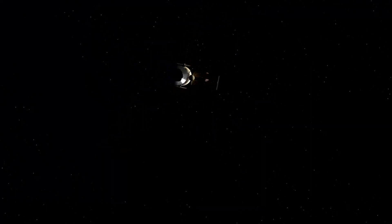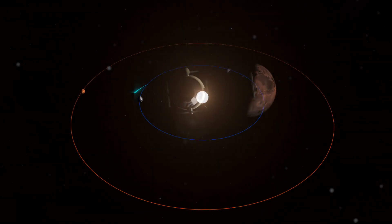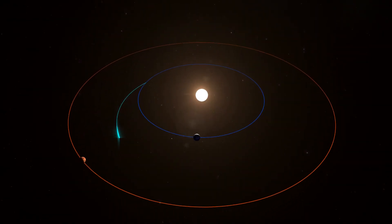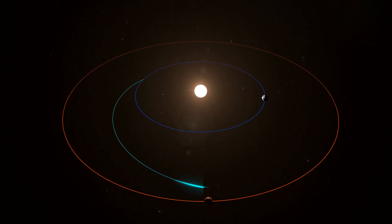That energy is used to get astronauts to Mars faster. NTP can take months off the trip compared to using traditional chemical systems.